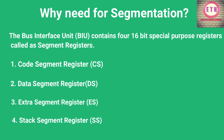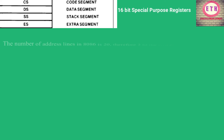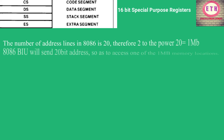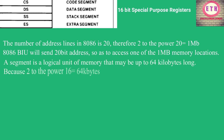The number of address lines in 8086 is 20, so the BIU sends a 20-bit address to access 1 MB of memory. The four segment registers contain the 16-bit starting addresses of four memory segments of 64 kilobytes each, which the 8086 works with at any given instant. A segment is a logical unit of memory that may be up to 64 kilobytes long, made up of contiguous memory locations, and is an independently, separately addressable unit.